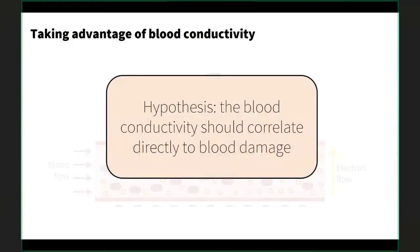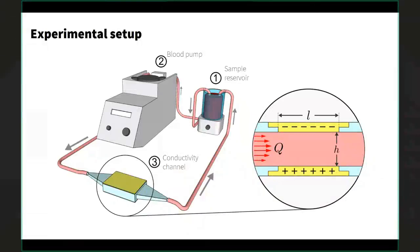Our hypothesis was that if blood is being damaged, the conductivity of the blood should correlate directly to the degree of blood damage. To test this, we designed a benchtop experimental setup — a simple blood pump driven by a peristaltic pump, representative of what's common in dialysis machines. We had a reservoir holding our working fluid, which was porcine (pig's) blood. The blood passed through a 3D-printed microchannel with conductive walls, and we monitored resistance across two conductive plates to get a conductivity measurement as blood flowed through.